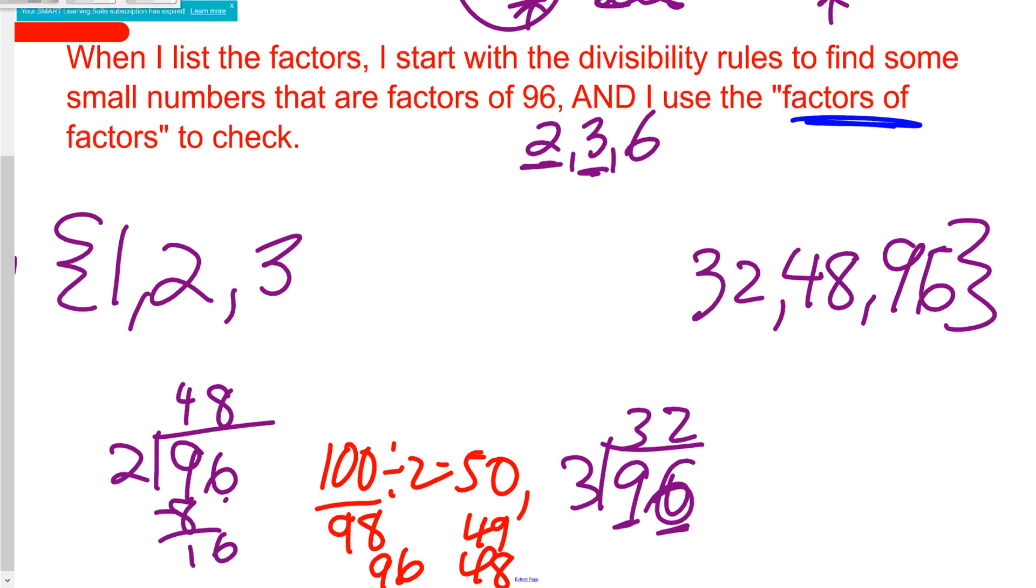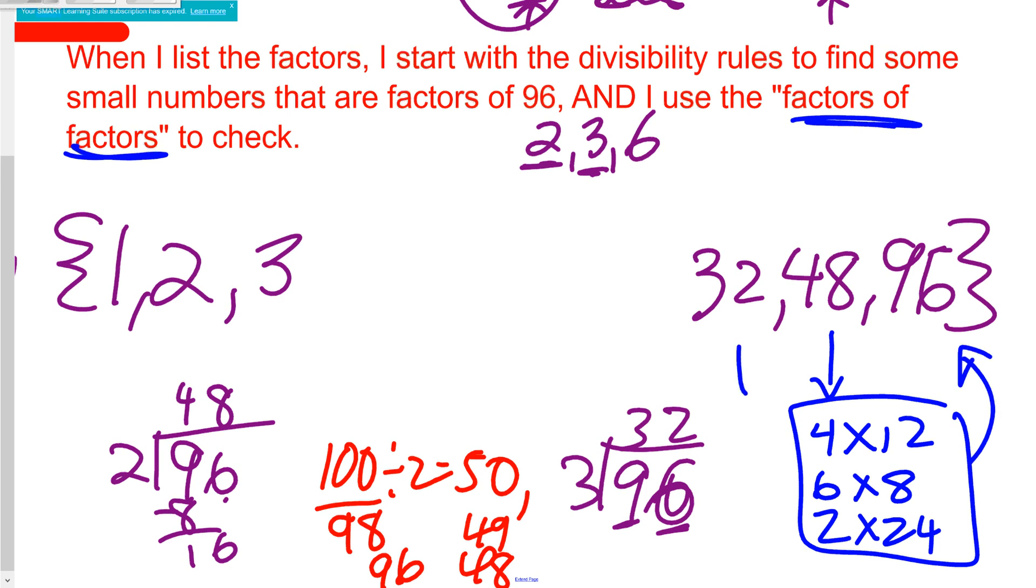Now I'm going to pause here for a moment because what I'm going to now think of is those factors of factors. So if I look at 48, I know 4 times 12, I know 6 times 8, I know there's probably others like 2 times 24. Well guess what, these are all going to be factors of 96.